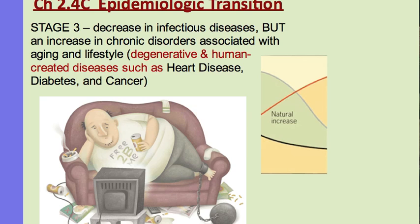Stage 3 and stage 4 go together just like stage 1 and 2 do. Stage 3 corresponds to demographic transition stage 3, where the crude birth rate is now declining — people choose to have fewer kids — and the death rate continues to decline. The diseases typical in a stage 3 country are not infectious diseases, because those have been dealt with, but rather degenerative diseases from old age and chronic disorders associated with lifestyle — heart disease, diabetes, and cancer.